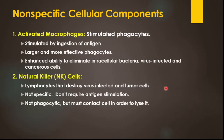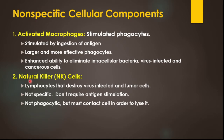There are some cellular components that help to destroy the target cells — there are macrophages. Activated macrophages are stimulated phagocytes, stimulated by the ingestion of antigen. When antigen ingestion happens, these macrophages activate. They are larger and more effective than regular phagocytes, with enhanced ability to eliminate intracellular bacteria, virus-infected cells, and cancer cells.